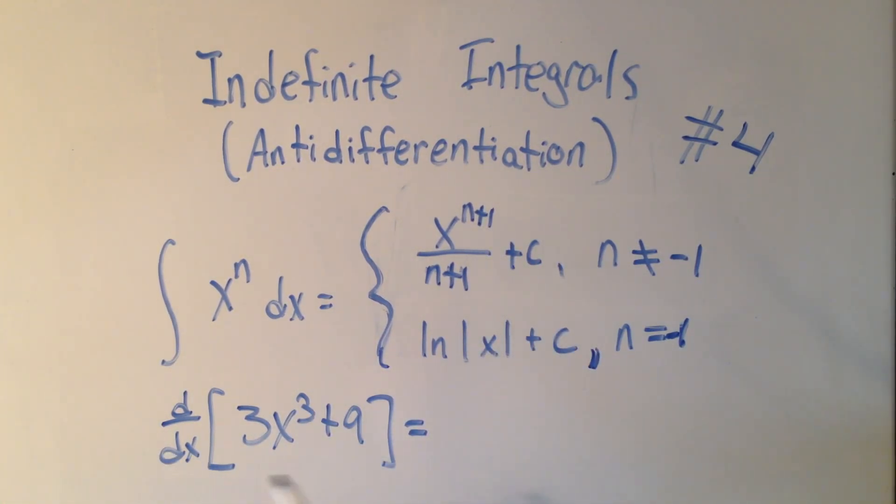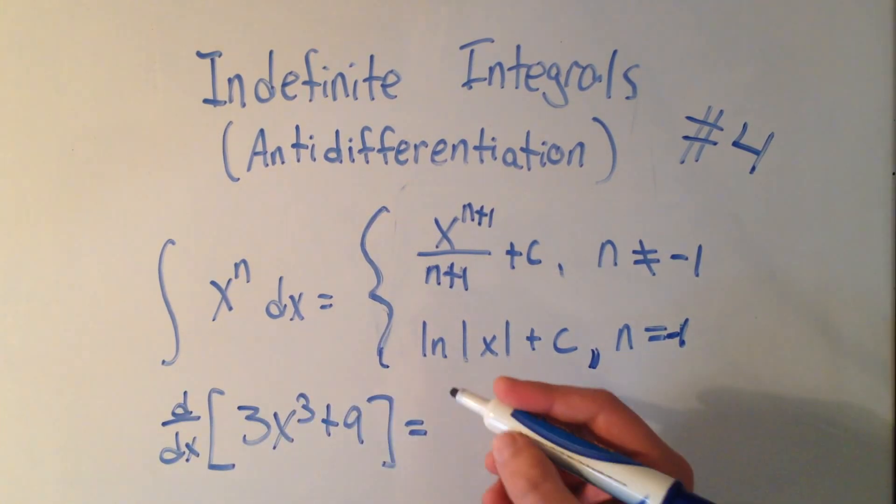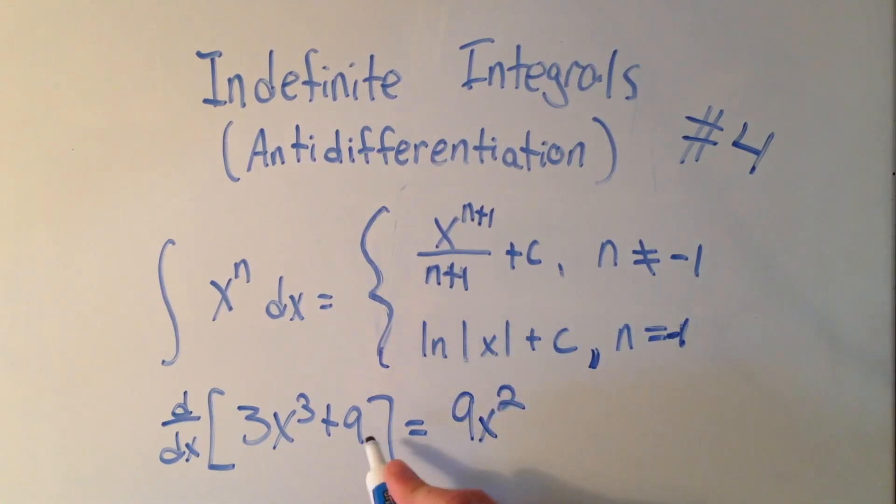Let me show you why. If I took the derivative of this thing, just using the power rule, the derivative of 3x cubed, I think that's going to be 9x squared. And the derivative of 9 is 0, so I won't write that. Okay, that was easy.